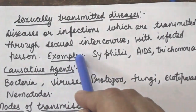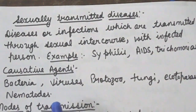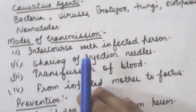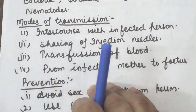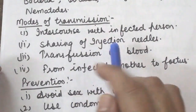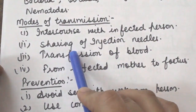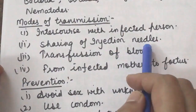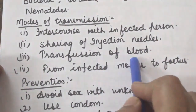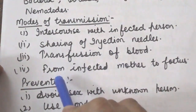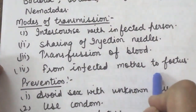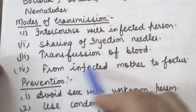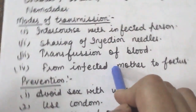Now, what is the mode of transmission of these diseases? STDs are generally transmitted as a result of sexual intercourse with an infected person, sharing of injection needles or surgical instruments with an infected person, transfusion of blood from an infected person, and from an infected mother to the fetus.